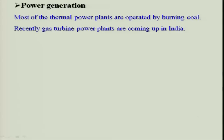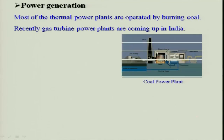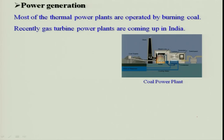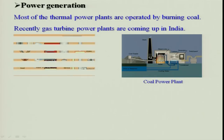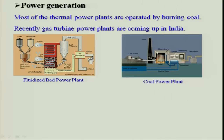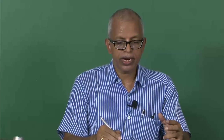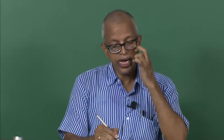Gas turbine power plants are also present in India. If you look at this coal power plant — a traditional boiler will be there. Pulverized coal is used to burn and fixed-bed grate combustion takes place with a steam turbine. More recently, a fluidized bed combustor is used where fluidized air keeps coal particulates suspended, enabling better combustion. Circulating fluidized bed combustors circulate the particulates so they do not escape to the atmosphere as much as in traditional plants.